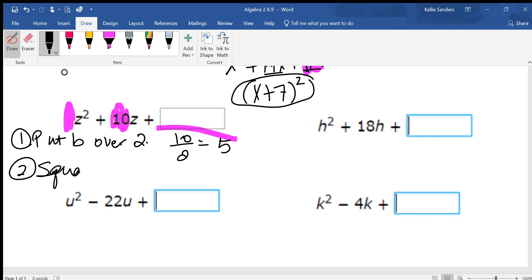Square your answer. So what's 5 times 5? 25. And that's going to be the answer of that problem to be able to complete the square. So if I put 25 right here, then we'd be able to factor it really quickly because Z plus 5 times Z plus 5 is Z squared plus 10Z plus 25.